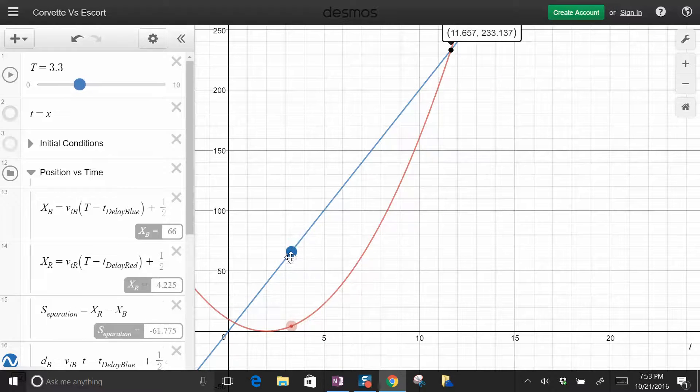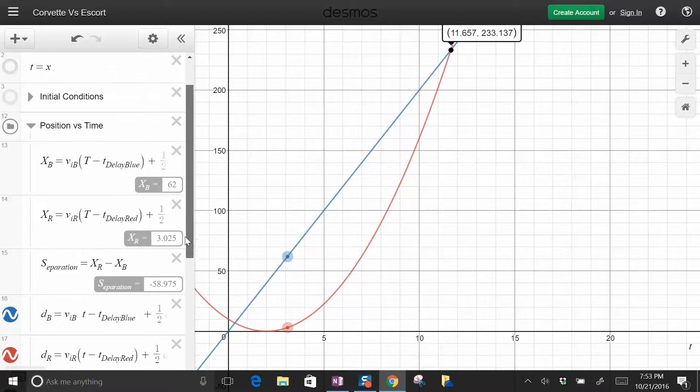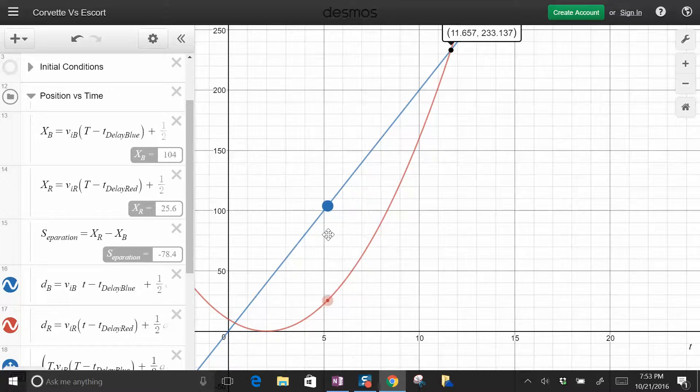And I do want to point out, as the time changes, and you can change that with the time slider or by moving one of these bars, both the position and the velocity will give you the values of both the blue and the red at that particular moment. So that's fun to do.